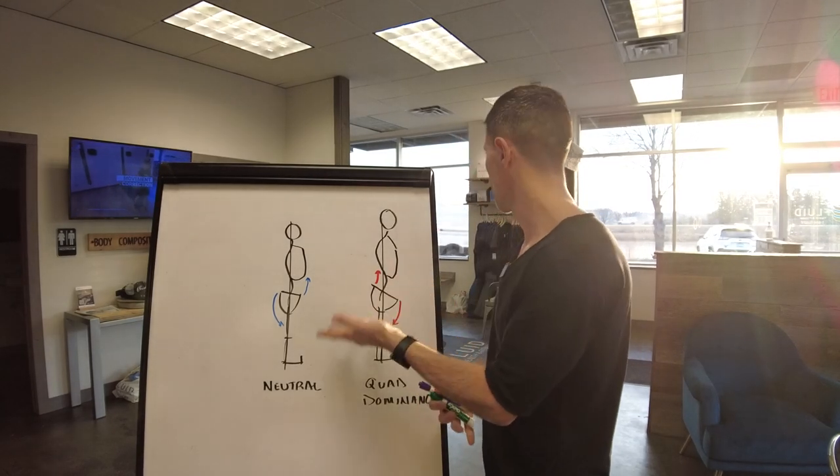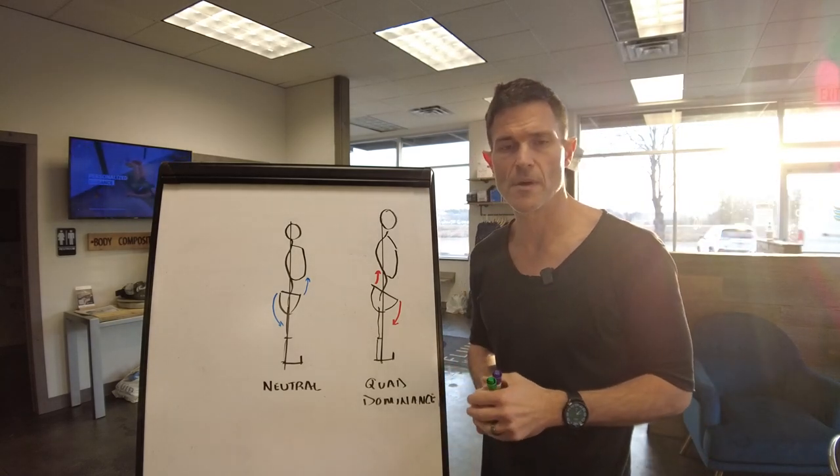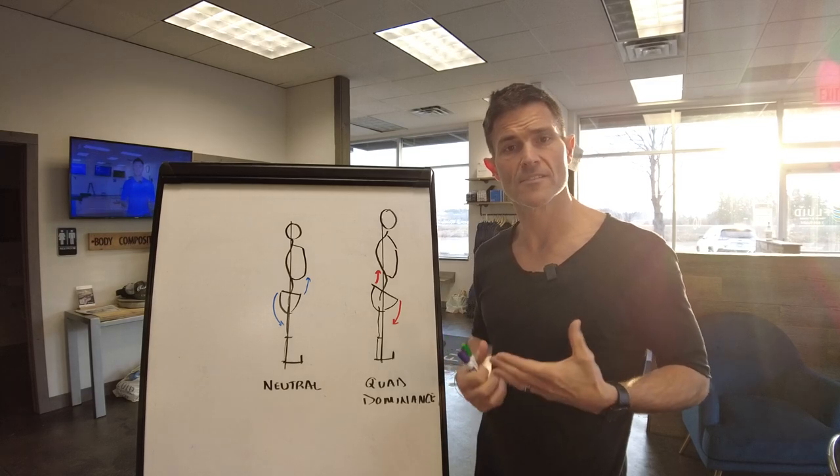These are power muscles that we use to create force in the body. Oftentimes, because we don't have appropriate balance from our intrinsic stabilization systems like our core canister, we have a tendency to have weak abdominals.